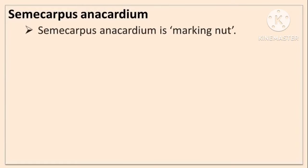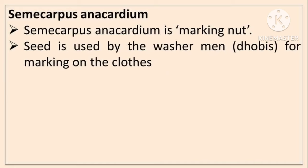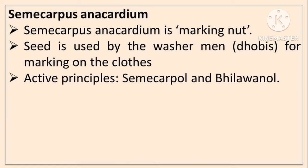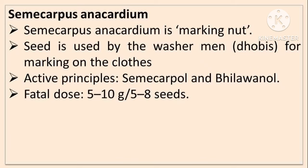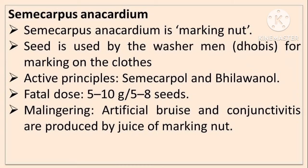Semicarpus anacardium is also called as marking nut. The seed is used by washermen (dhobis) for marking on clothes, hence called marking nut. The active principles are Semicarpol and Bhilawanol. Fatal dose is 5 to 10 g, equivalent to 5 to 8 seeds. It is also used for malingering — feigning of diseases. To create artificial bruises and conjunctivitis, the juice of marking nut is used. We have to rule out true bruises from artificial bruises. For malingering purposes, Semicarpus anacardium juice is used.